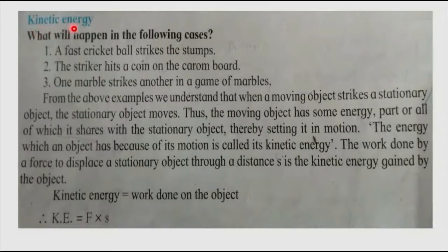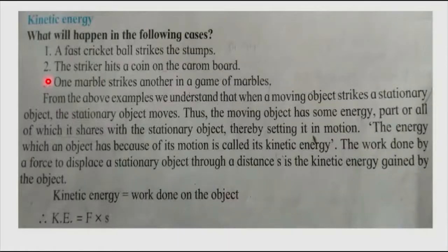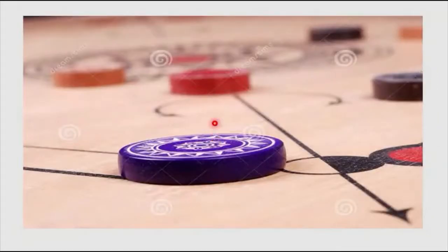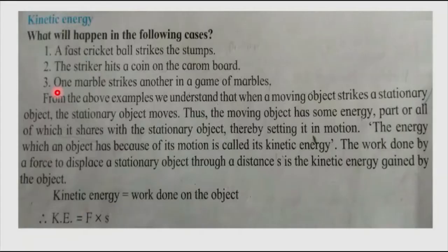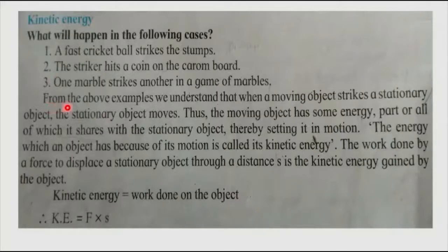Now let's see kinetic energy first. What will happen in the following cases? First case: a fast cricket ball strikes the stumps. Because of the moving ball, the bails and stumps come into motion. Second case: the striker hits a coin on the carom board. Because of the striker, the coin comes into motion. Third: one marble strikes another in a game of marbles. Because of the moving marble, the other stationary marble comes into motion. From these examples, we understand that when a moving object strikes a stationary object, the stationary object moves.